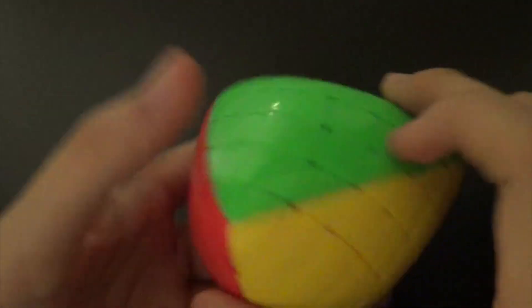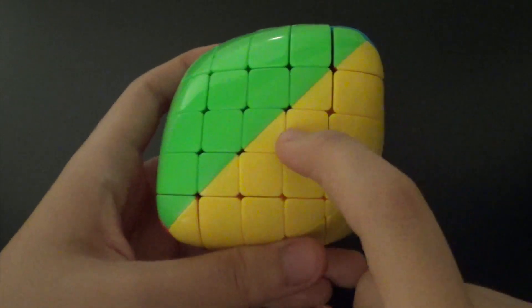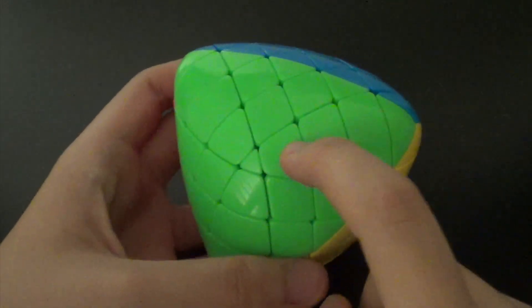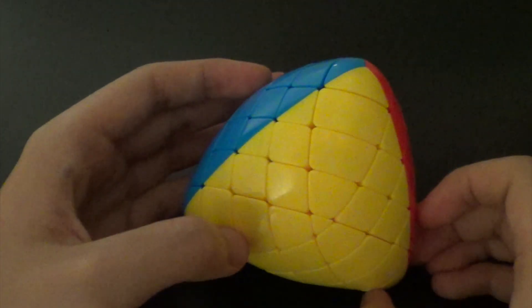So with the reduction method and the instructions on how to finish the centers and the edge pieces, you are all set to solve the mastermorphics.